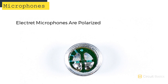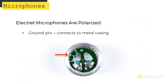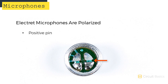Electret microphones are polarized, so they have a positive pin and a ground pin. You can see the traces branching off of this pin - those connect to the casing, so this is the ground pin here. And this is the positive pin.